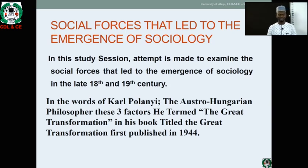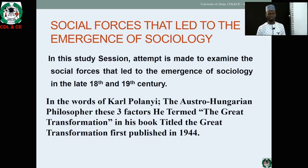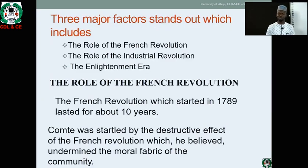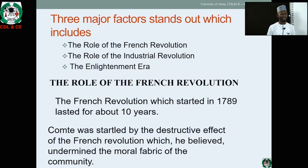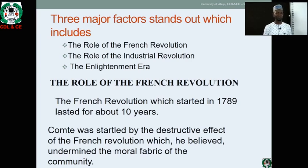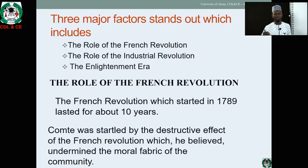In the words of Karl Polanyi, the Austro-Hungarian philosopher, in his book he termed The Great Transformation, he says there are three factors responsible for the emergence of this discipline we call Sociology today. These three factors are: one, the role of the French Revolution; two, the role of the Industrial Revolution; and three, the Enlightenment era. Karl Polanyi in his book published in 1944, The Great Transformation, says this is what led to the emergence of this discipline that we call Sociology today.